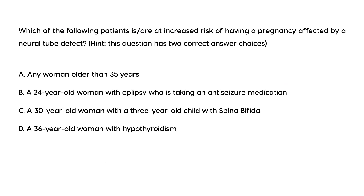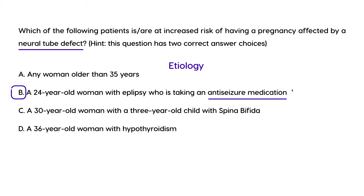Next question: Which patients are at increased risk of having a pregnancy affected by a neural tube defect? There are two correct answers. The etiology includes folate deficiency, seizure medications, obesity, and smoking. Having a prior pregnancy with a neural tube defect is also a well-established risk factor for a subsequent pregnancy with a neural tube defect.